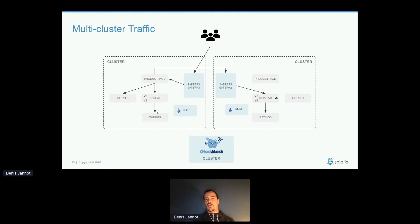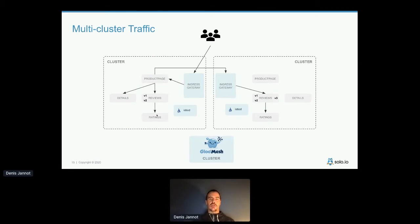If you're familiar with Istio, you know Bookinfo — all the examples on the website use it. The product page (the frontend) calls backend services: the reviews service, the details service, and the reviews service calls the ratings service. The two clusters both have the app deployed, but only cluster two has version 3 of the reviews service. The difference: v1 shows no stars, v2 shows black stars, v3 shows red stars.